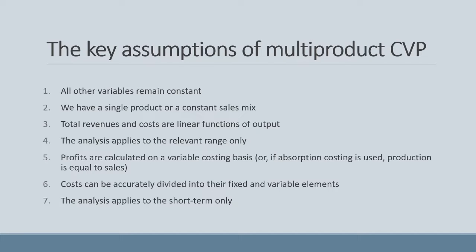Now let's consider the key assumptions of Multiproduct CVP Analysis. The basic assumptions are on screen. While all these assumptions still need to hold true, I want to highlight two in particular. The first is that we need to have a constant sales mix. The sales mix enables us to create a weighted contribution and then determine the breakeven point. If the sales mix changes, our weighted contribution would either increase or decrease.